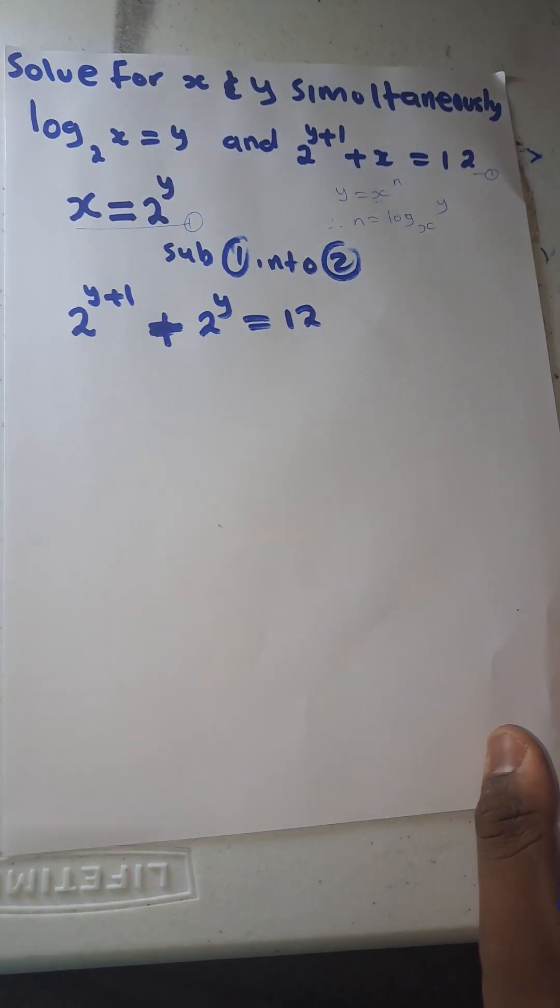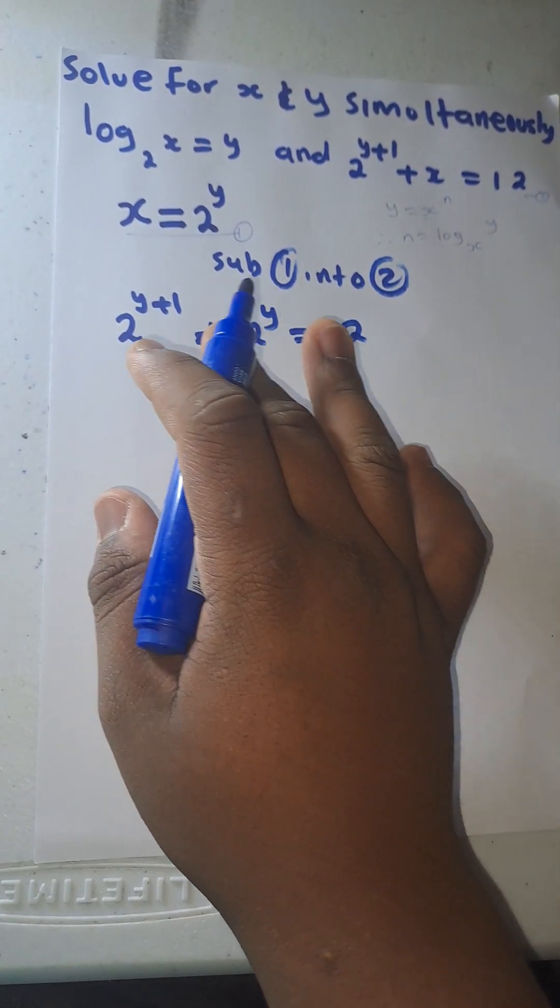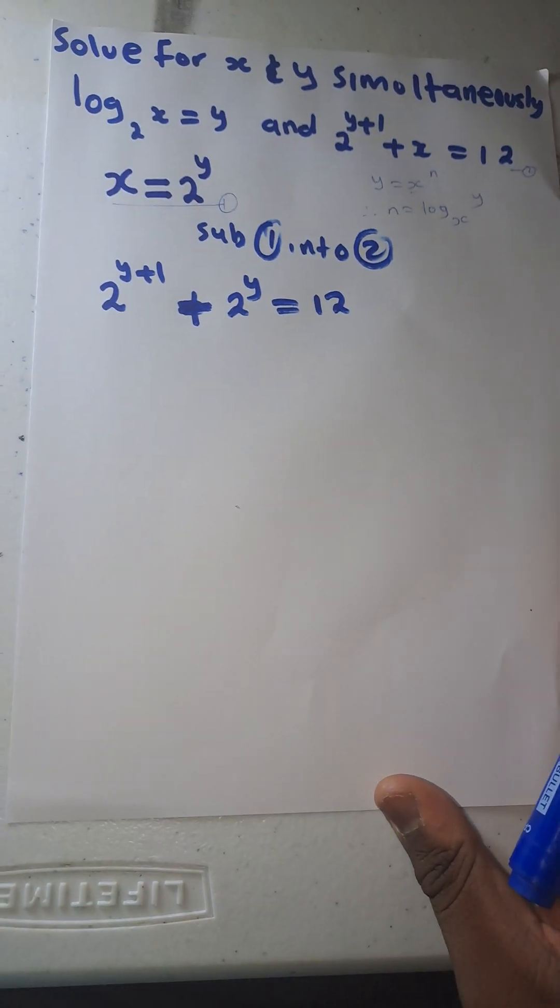Plus 2 to the power y equals to 12. You see now, since it is like this and there's an addition sign, you know from your laws of exponents I can split.